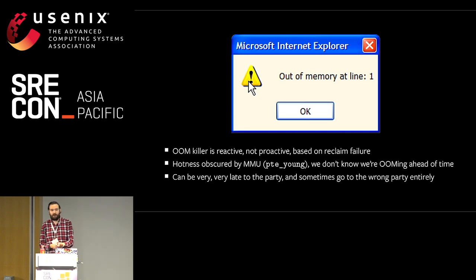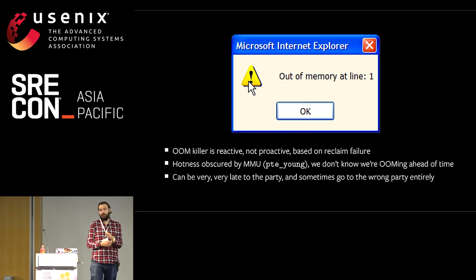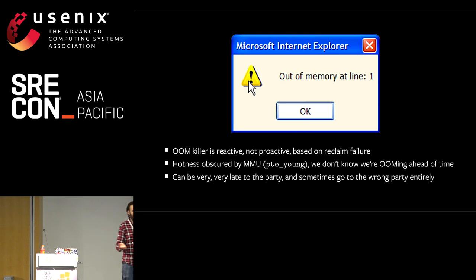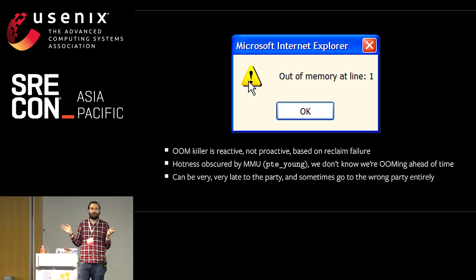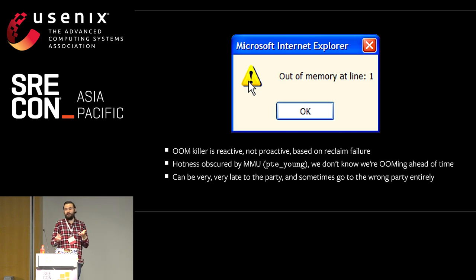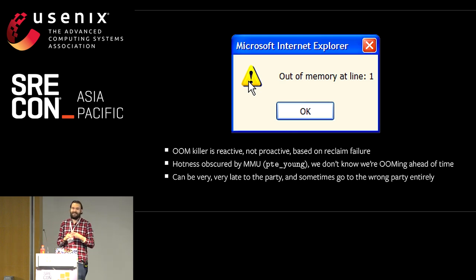Another problem with the OOM killer is it's not really configurable. We have these magical things called OOM scores. You put a number — like 1000 or minus 1000 — and pray that this number is higher or lower than some other one. In general, nobody knows how this works. It's attempting to mitigate the fact that the OOM killer really has no idea what it should kill. Usually, if you set it loose on a machine running a web server, it will just kill the web server because it's the largest thing on the machine. But that doesn't mean it was the thing that caused the problem. We need something more fine-grained to actually deal with this.